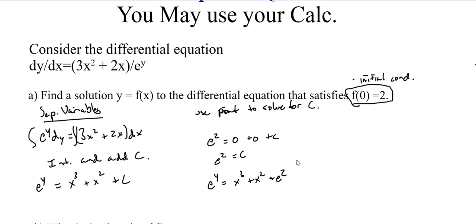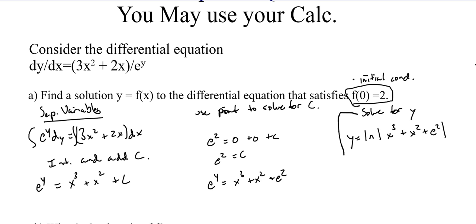So we have e^y equals x cubed plus x squared plus e squared. From here, we're going to solve for y — the final part is solve for y. We're going to take the natural log of both sides. So y is going to equal the natural log of the quantity x cubed plus x squared plus e squared. We just solved this differential equation!